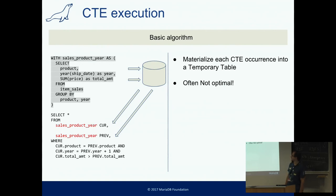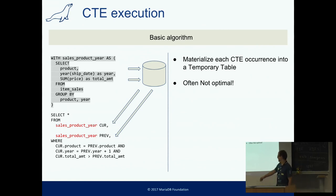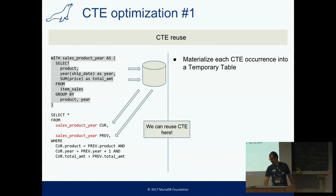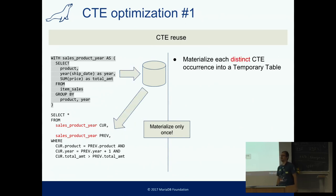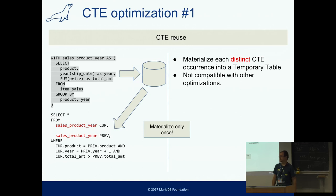So how do we execute CTEs? One idea is to just execute the query which defines the CTE, store it into a temporary table, and whenever you need it, you use that table — and this is the basic algorithm; it always works. But if you have multiple references, you have to create two temporary tables, which is not optimal. However, when you find that you are reusing a CTE twice, it is a good idea to create only one temporary table per distinct CTE expression. This optimization helps by saving space and execution time. However, when you do this, you cannot perform other optimizations — it's either this one or something else.